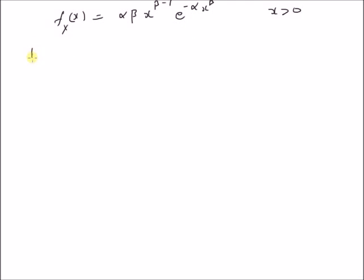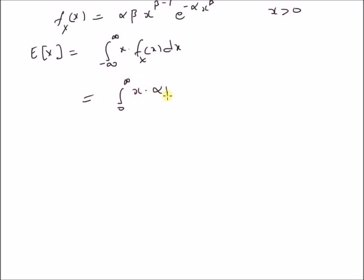We want to derive the mean, that is the expectation of x, which is defined as the integral from minus infinity to plus infinity of x * f(x) dx. But since x is positive, we have the integral from 0 to infinity of x * alpha * beta * x^(beta - 1) * e^(-alpha * x^beta) dx. This is the definition of the mean of the Weibull distribution.